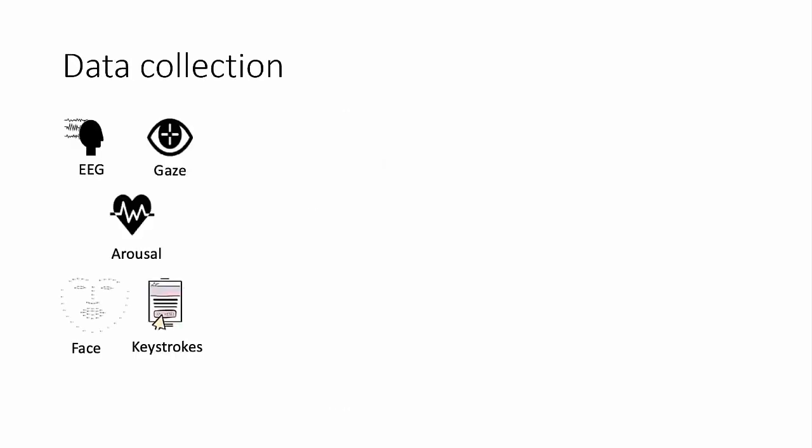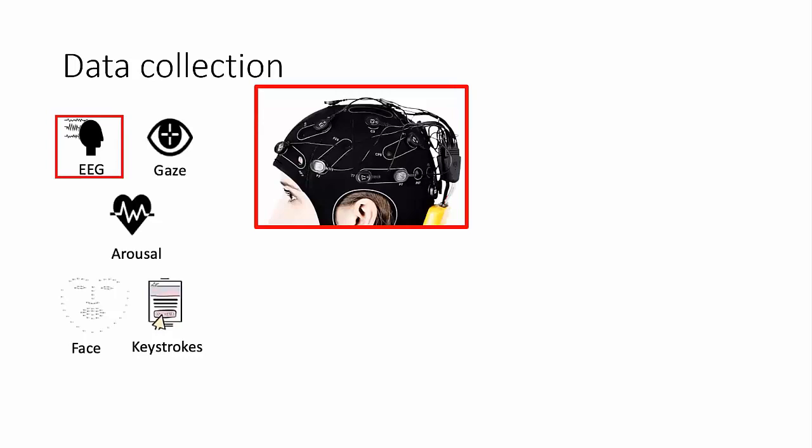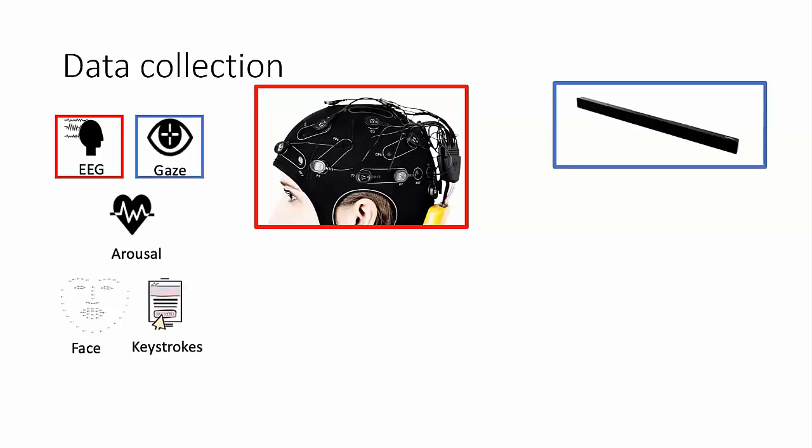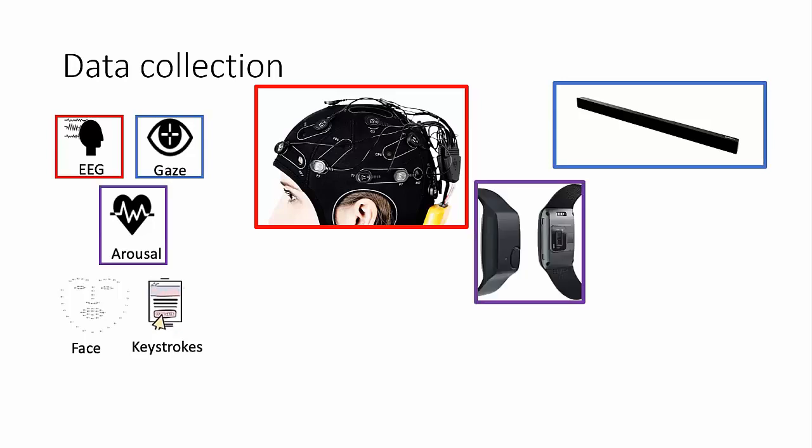So for data collection, we used an EEG cap, an ENOBIO 20 channel cap with 500 hertz sampling rate. For eye tracking, we used Tobii 120 hertz monitor-based eye tracker that was fixed at the bottom of the monitor. For capturing arousal, we used an Empatica E4 that captures four data streams: electrodermal activity, heart rate, temperature and blood volume pulse at different sampling rates.